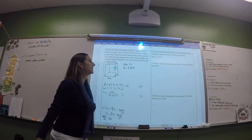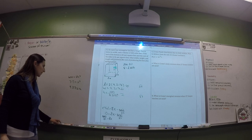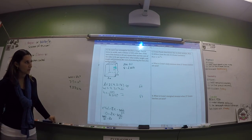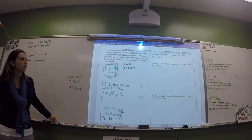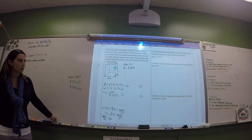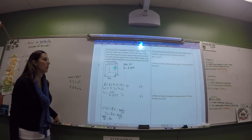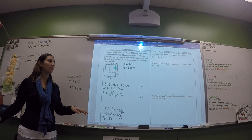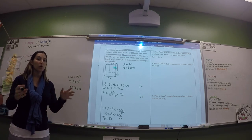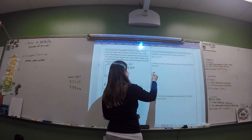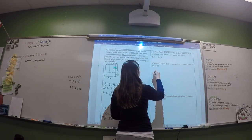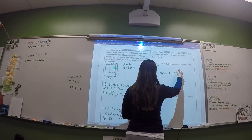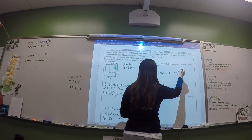This one's pretty easy — it gives you a revenue function. It wants you to find the daily revenue when 27 frozen lunches are sold, so you just plug in 27: R(27) equals 3 times 27 to the two-thirds power.